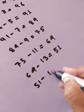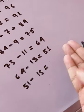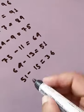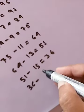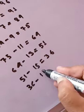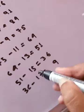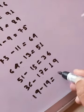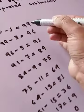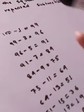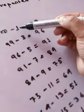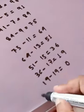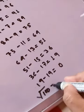Continuing: 51 minus 15 equals 36. Then 36 minus 17 equals 19. Then 19 minus 19 equals 0. You continue until you reach 0. Now count how many times you subtracted: 1, 2, 3, 4, 5, 6, 7, 8, 9, and 10. So the square root of 100 is 10.